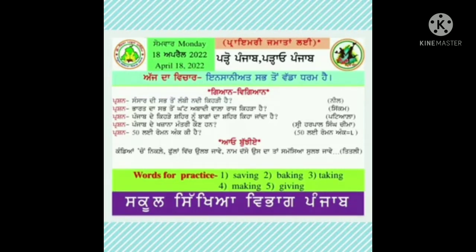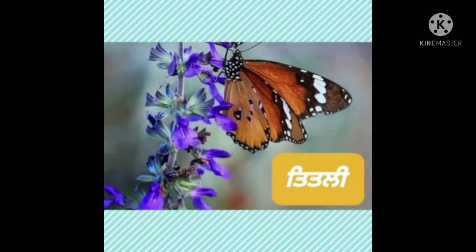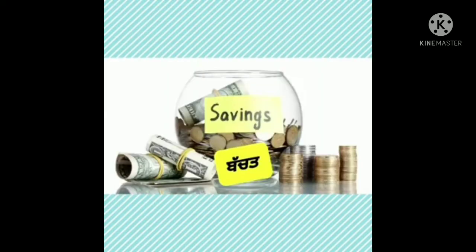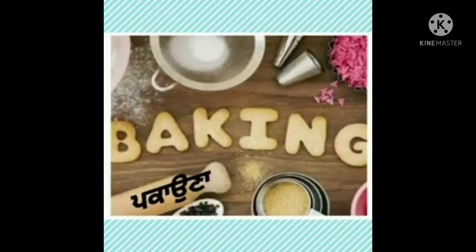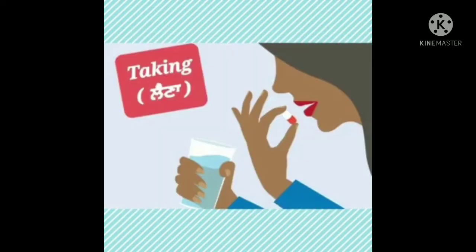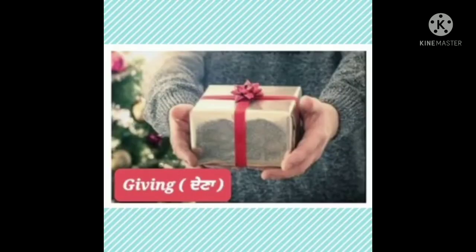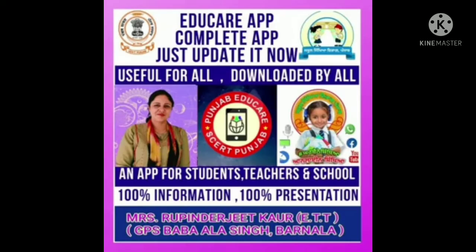ਰਿਡਲ: ਕੰਡਿਆਂ ਚੋਂ ਨਿਕਲੇ, ਫੁੱਲਾਂ ਵਿੱਚ ਉਲਝ ਜਾਵੇ, ਨਾਮ ਦੱਸੋ ਉਸਦਾ ਤਾਂ ਸਮੱਸਿਆ ਸੁਲਝ ਜਾਵੇ। ਜਵਾਬ ਹੈ ਤਿਤਲੀ - butterfly. Words for practice: Saving S-A-V-I-N-G - ਬੱਚਤ। Baking B-A-K-I-N-G - ਪਕਾਉਣਾ। Taking T-A-K-I-N-G - ਲੈਣਾ। Making M-A-K-I-N-G - ਬਣਾਉਣਾ। Giving G-I-V-I-N-G - ਦੇਣਾ। ਅੱਜ ਦੀ ਸਲਾਈਡ ਕੰਪਲੀਟ ਹੋਈ। Take care all of you and have a great day.